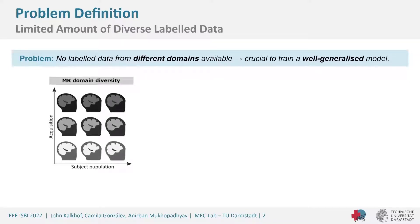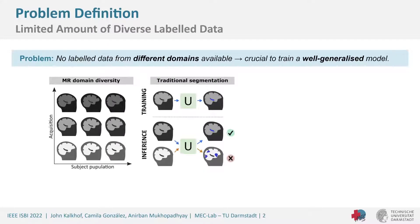What are these domain differences? Domain differences can be differences in population and acquisition. These are problems because if we train a segmentation model the traditional way — for example, using a U-Net on training data — it's likely going to perform well in the training domain. But the moment we use data from a new domain, it's likely not going to work very well and might even fail completely.